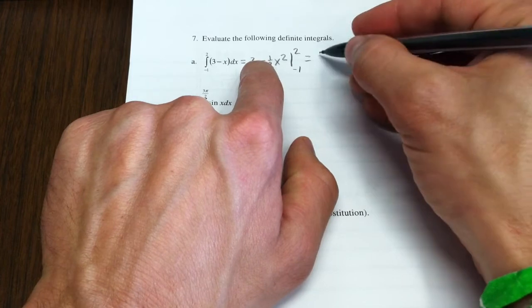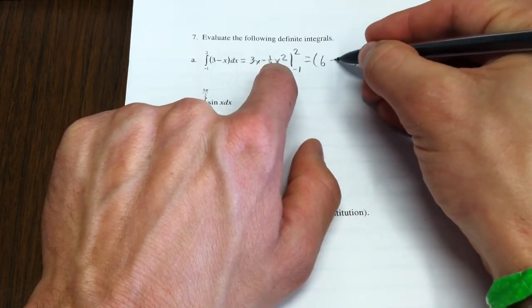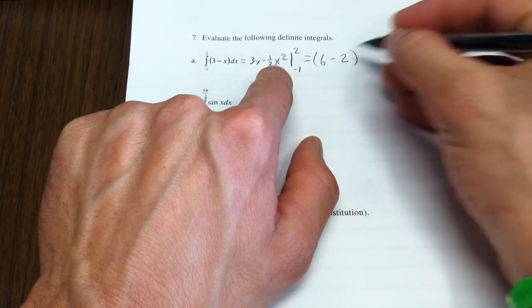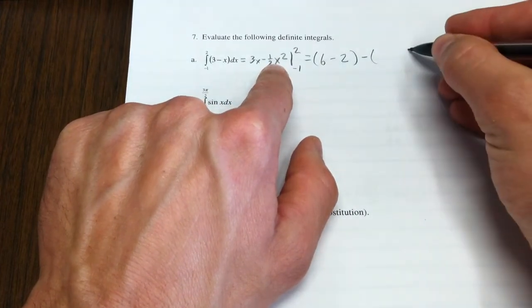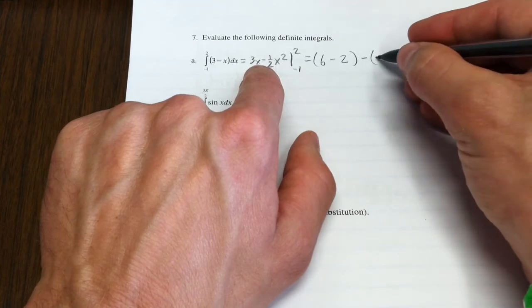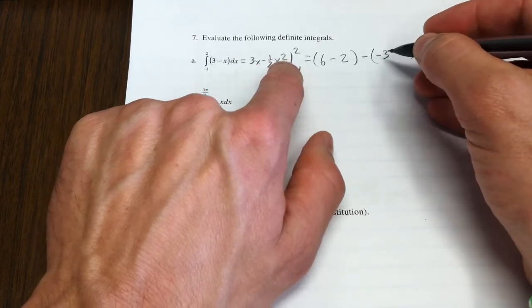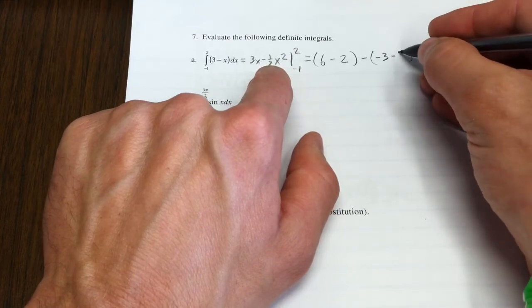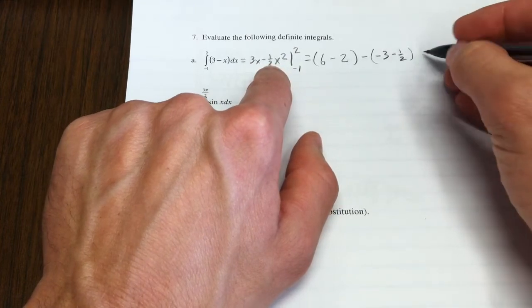We'll plug 2 into this, so 2 times 3 is 6 minus 2 squared is 4 over 2. That's going to be 2 minus the same thing evaluated at negative 1, so that's going to be negative 3. Negative 1 squared is 1 times one-half is one-half.